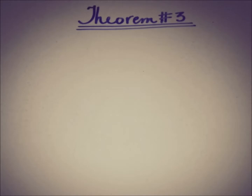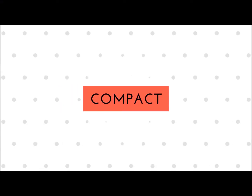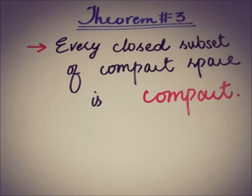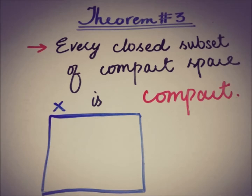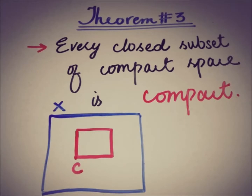Hello everyone, this is DA from EA Academy. Today the next property of compact spaces that we are going to talk about is: initially we have a compact space X and a closed subset of this compact space, let's say we call it C. Now if we have a cover of this closed subset C, then we can figure out a finite subcover for that C in order to prove it a compact subset.